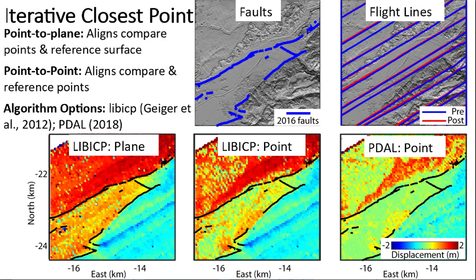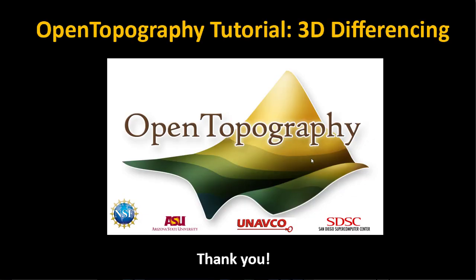The live ICP point-to-plane algorithm shows large displacements across the faults, with some noise likely due to flight line error in the lidar data. In contrast, the live ICP point-to-point and the PDAL point-to-point algorithms show displacements that correlate with changes in landscape — from agricultural lands to town and forested areas — which is unlikely to have occurred during the earthquake. Therefore, we prefer the live ICP point-to-plane algorithm. Thank you for watching, and we hope you enjoy doing 3D topographic differencing on Open Topography.